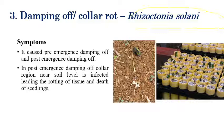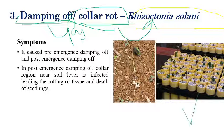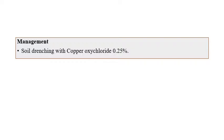Damping off or collar rot is caused by Rhizoctonia solani. The disease name itself indicates rotting of the collar region or initial damping off of the seedling. Pre-emergence damping off occurs before the seed emerges from the soil. In post-emergence damping off, the seedling dies at the seedling stage. In this collar rot, the collar region in the soil slowly starts to damp off, leading to death of the seedlings in later stages.